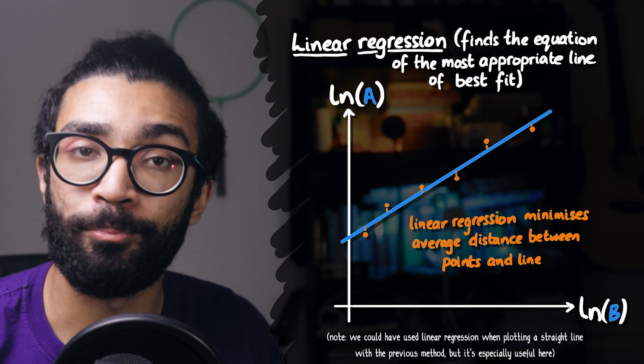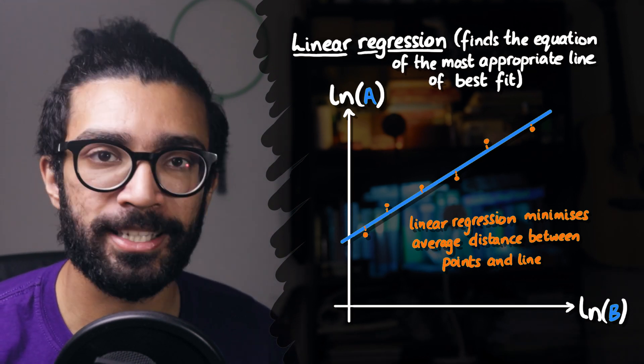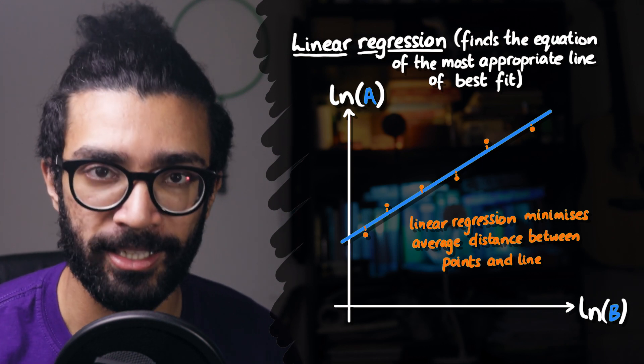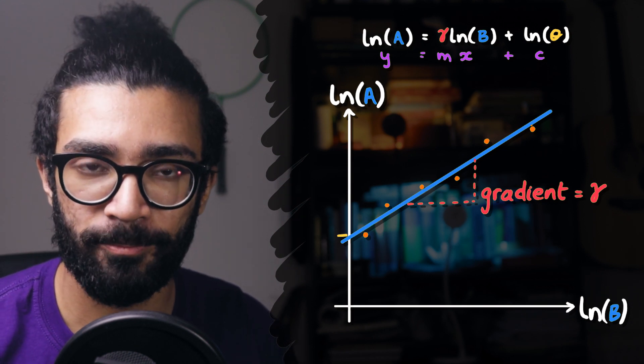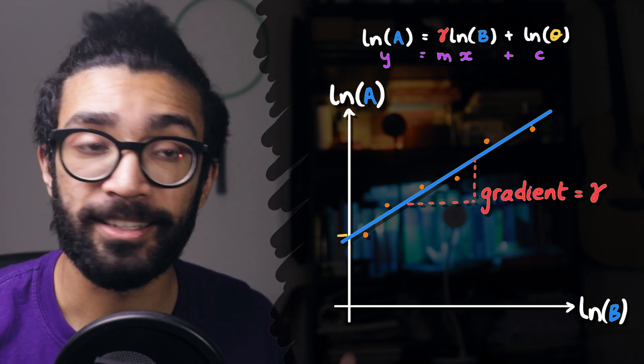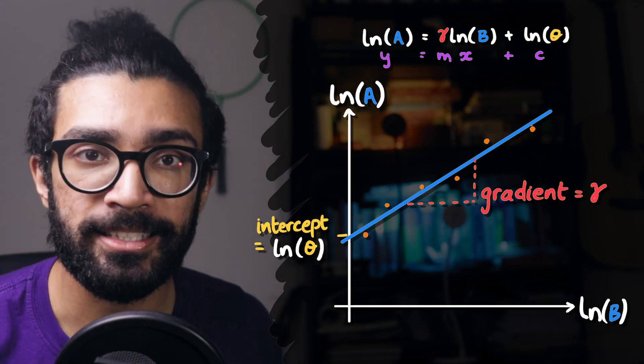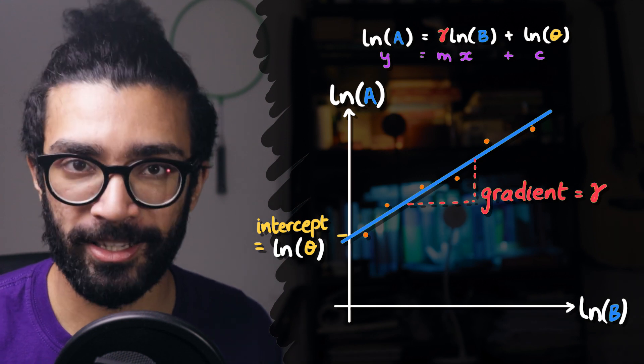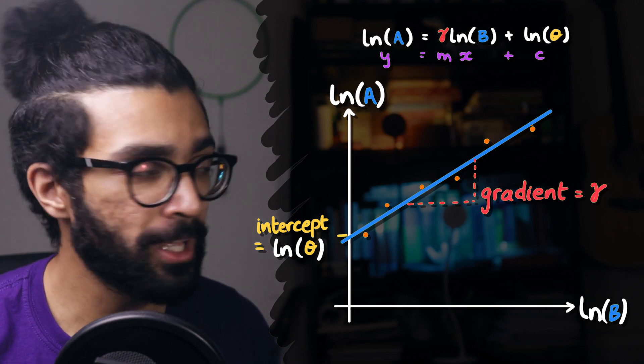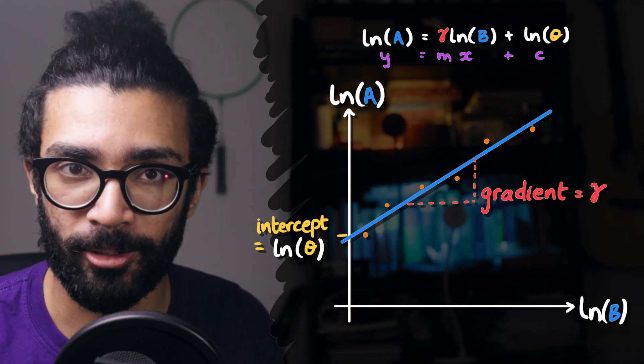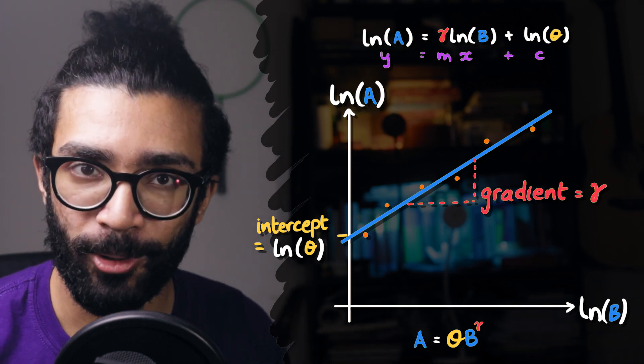In other words, this straight line is the best straight line representation of our data. But the important thing is that when we've plotted the line of best fit for this particular graph, the gradient or slope of this graph directly gives us the power that we were trying to verify. It gives us gamma. And the vertical axis intercept for this straight line is actually equal to the natural log of theta, which was our constant of proportionality. So by taking logarithms and plotting the logarithm of the dependent variable against the logarithm of the independent variable, we are able to find the values of theta and gamma, the constant of proportionality and the power.